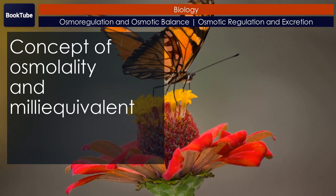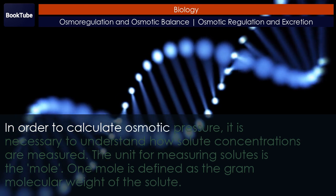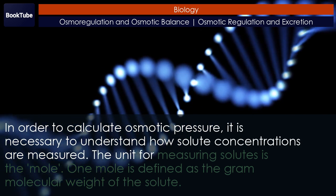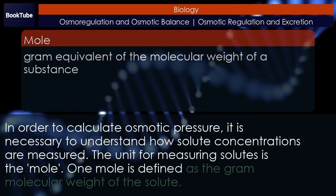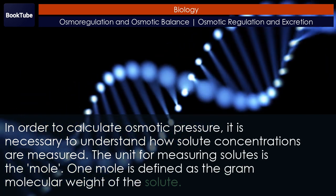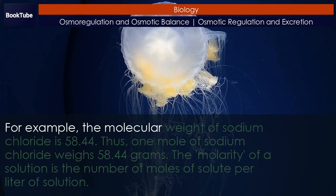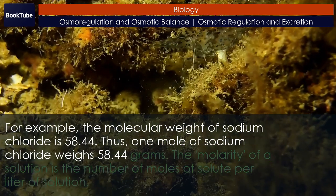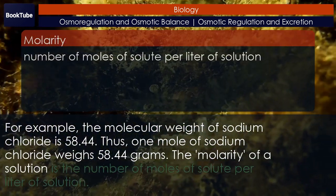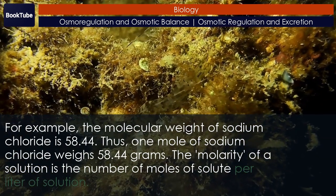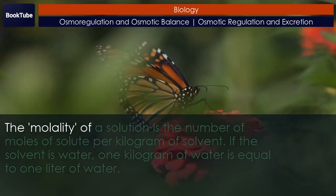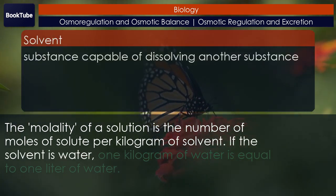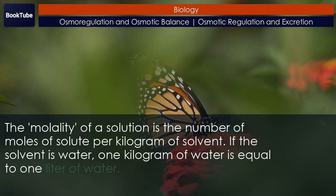Concept of osmolality and milliequivalent. In order to calculate osmotic pressure, it is necessary to understand how solute concentrations are measured. The unit for measuring solutes is the mole. One mole is defined as the gram molecular weight of the solute. For example, the molecular weight of sodium chloride is 58.44, so one mole of sodium chloride weighs 58.44 grams. The molarity of a solution is the number of moles of solute per liter of solution. The molality of a solution is the number of moles of solute per kilogram of solvent. If the solvent is water, one kilogram of water is equal to one liter of water.